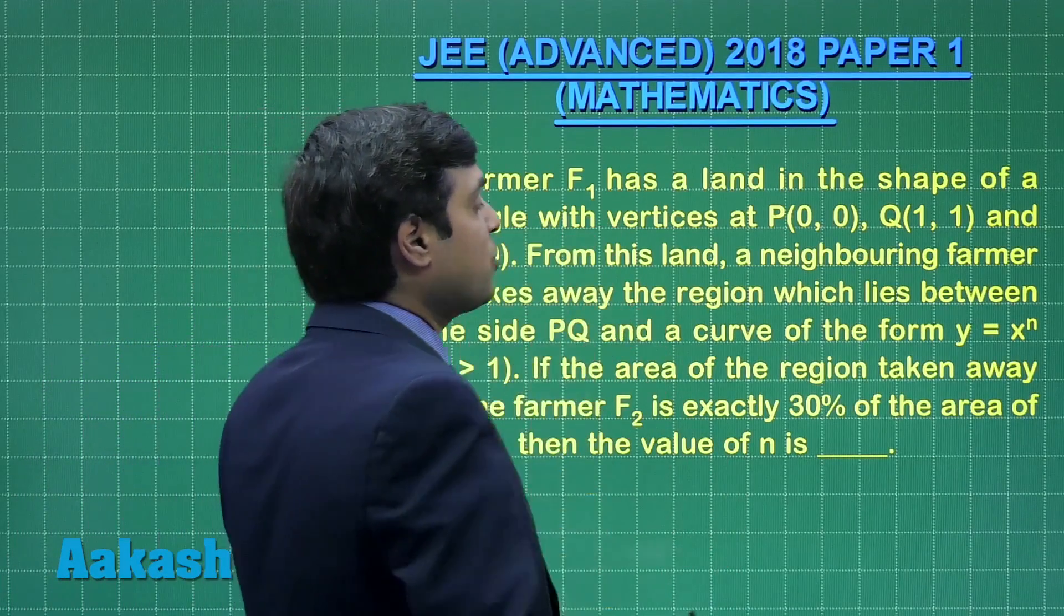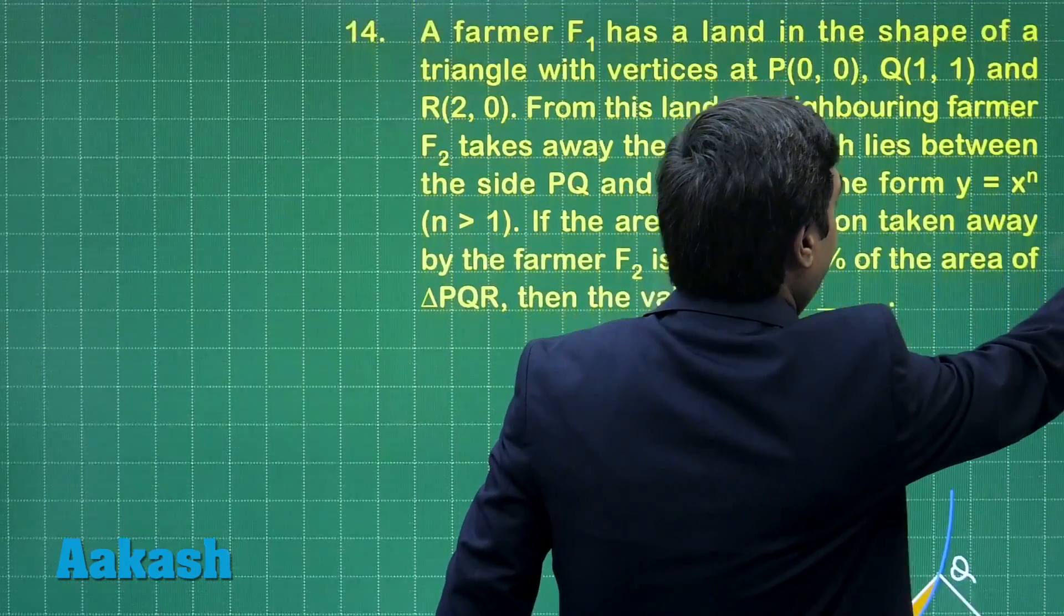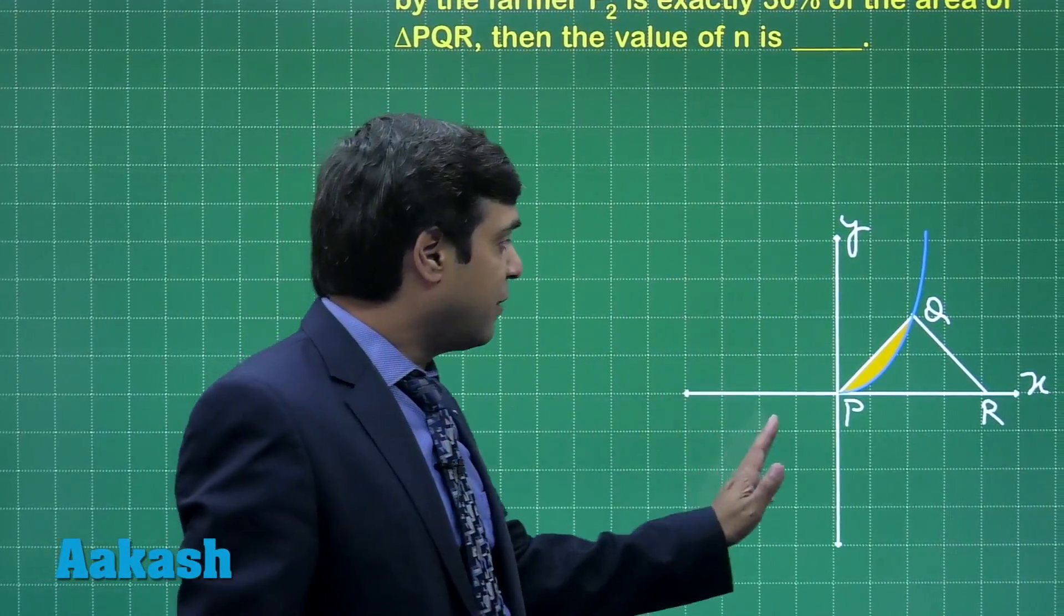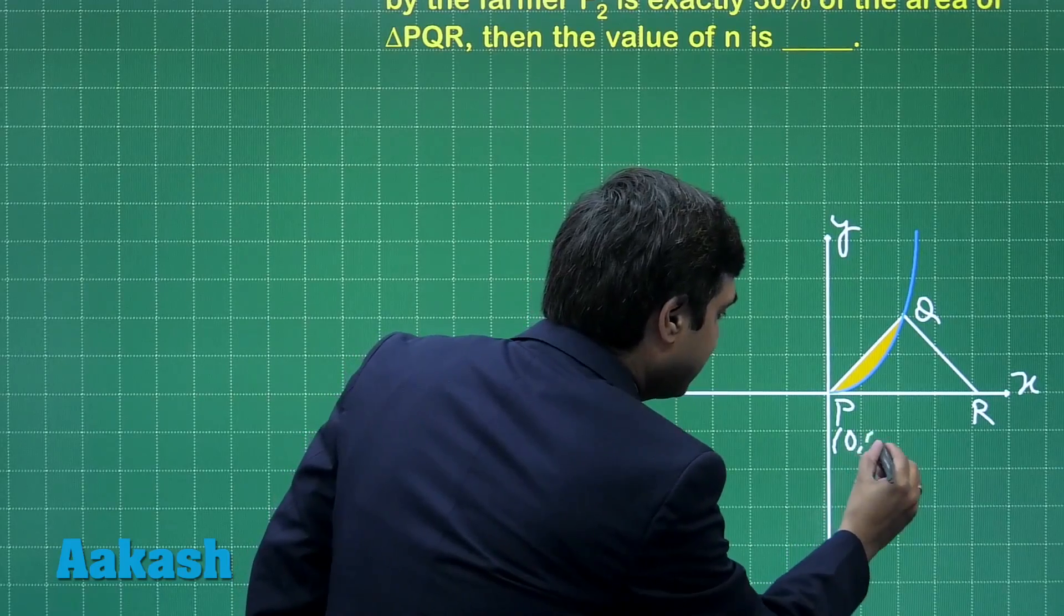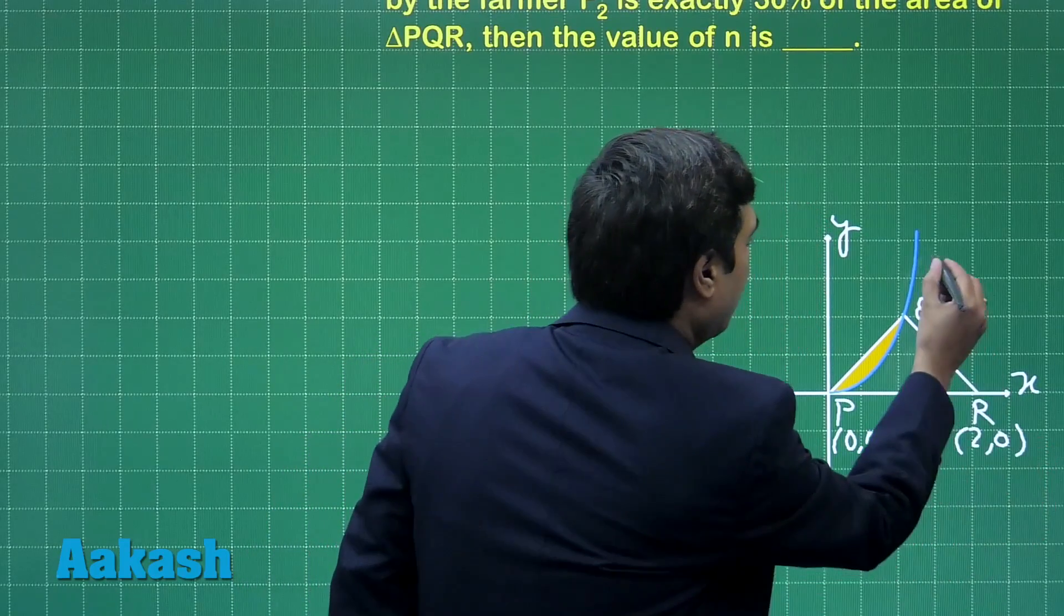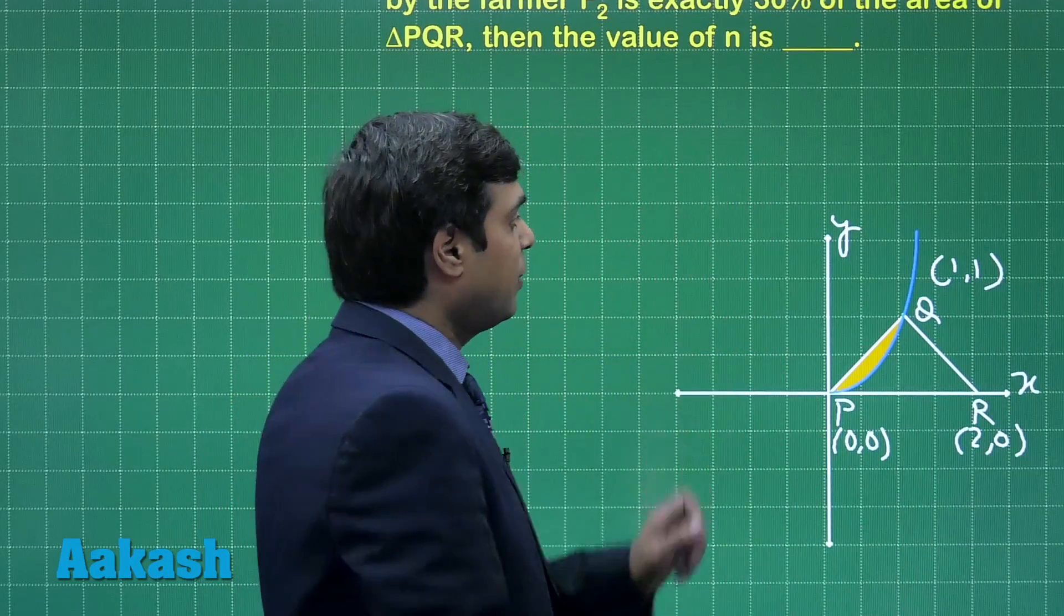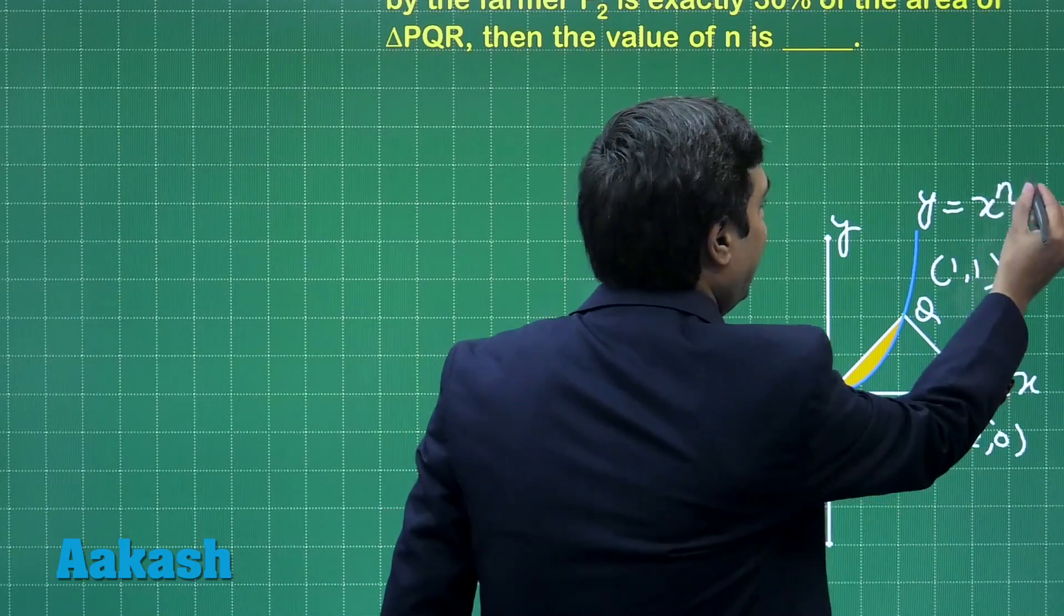Simple one, although it looks pretty lengthy, but it is quite simple. Let us draw the figure as given in this statement. It is given a triangle PQR with vertices (0,0), (2,0), (1,1), and a curve of the form y = x to the power n.